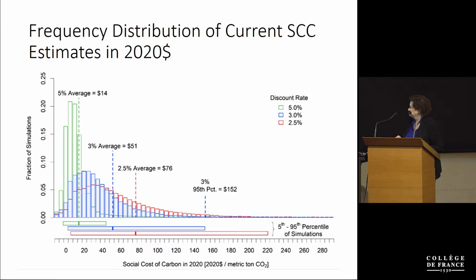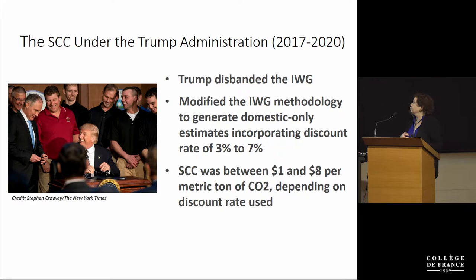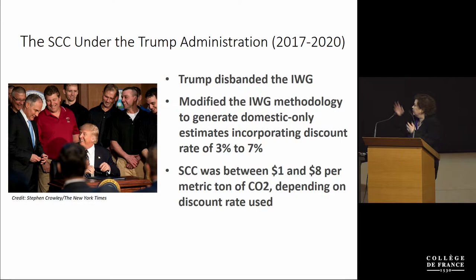When Donald Trump became president, the interagency working group was disbanded. The edict was that we could look only at damages to the United States rather than damages to the world, and we had to use a discount rate of 7% — the pre-tax rate of return on capital as estimated by the U.S. government. So the social cost of carbon fell to a single-digit number during the Trump administration.